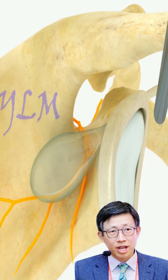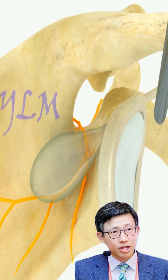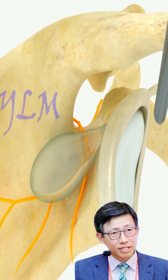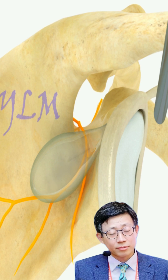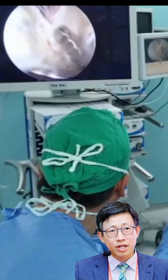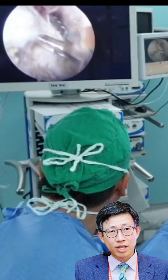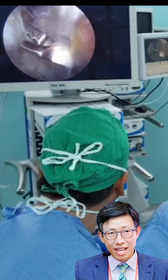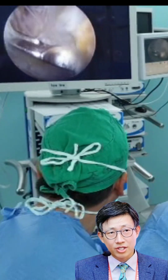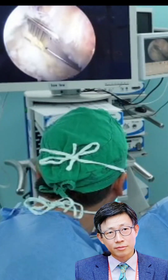Surgery is recommended if other treatments have not been successful. Surgery involves removing the ganglion cyst and any scar tissue that may be compressing the nerve.